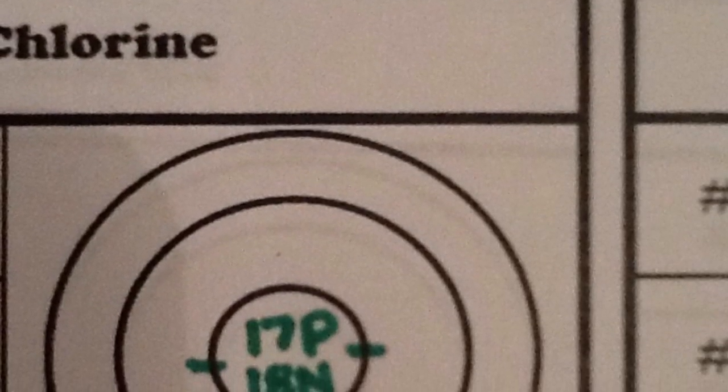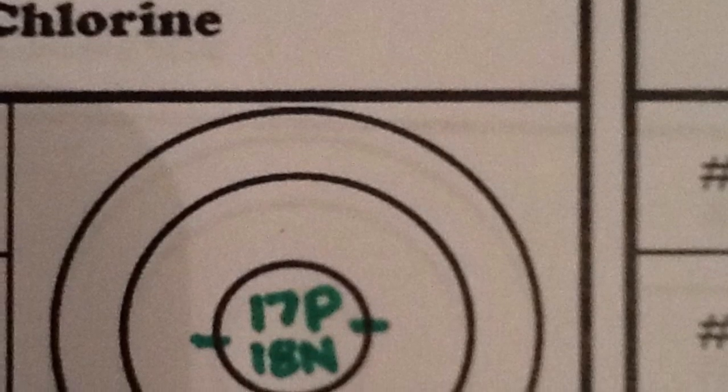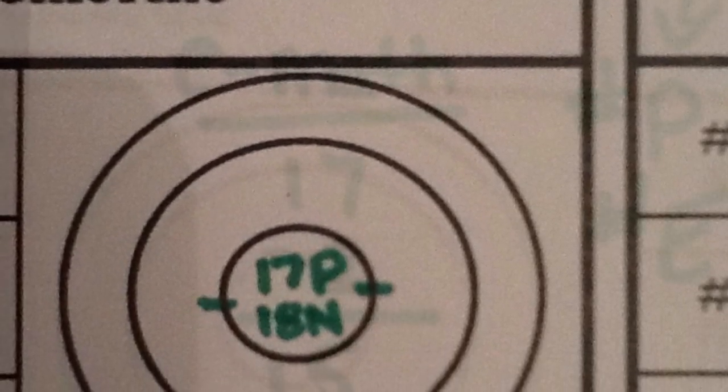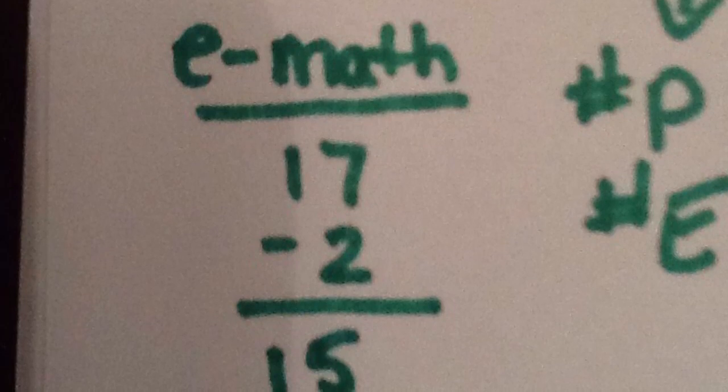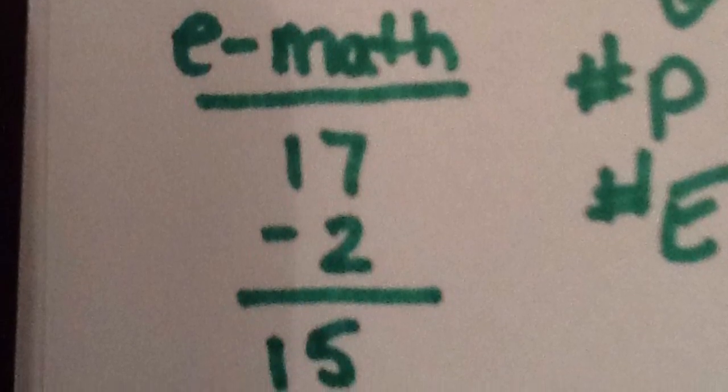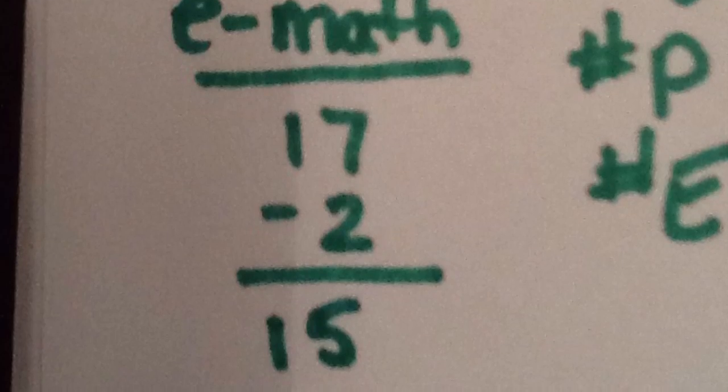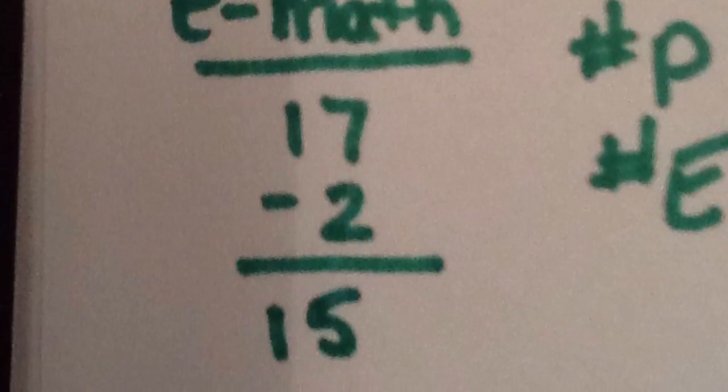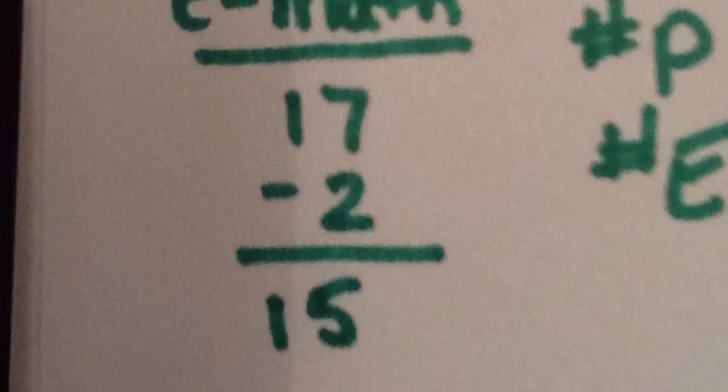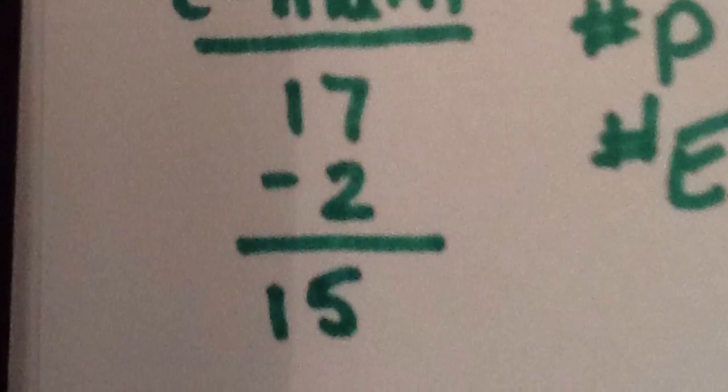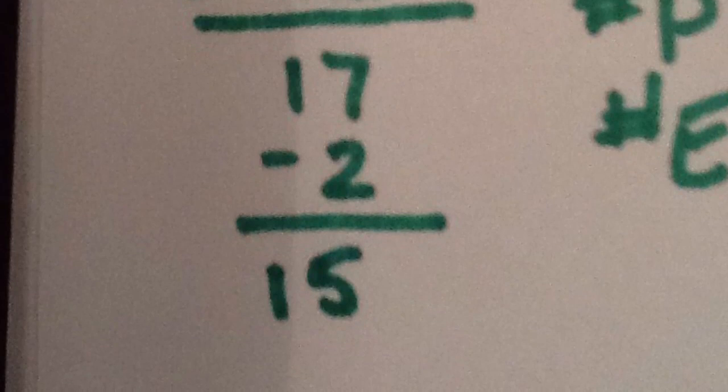Now for the electrons. In the first energy level there can fit two electrons. I like to do the math off to the side just to make sure that I'm keeping track with my electrons as I fill them in the different energy levels. So I start out with 17 electrons. I've put two in the first energy level so that leaves me with 15 left to put in their energy levels in the orbits around the nucleus.